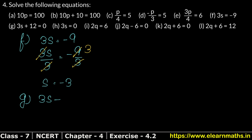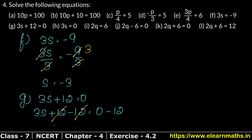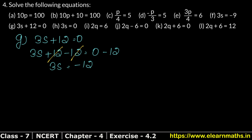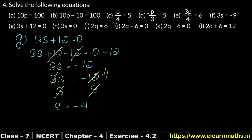Let's do Part G now. Part G is: 3s plus 12 equals 0. Since 12 is positive, we subtract 12 from both sides. Plus 12 minus 12 cancels, and 0 minus 12 gives minus 12. So 3s equals minus 12. Then we divide both sides by 3. Since 3 times 4 is 12, s equals minus 4 is the answer.